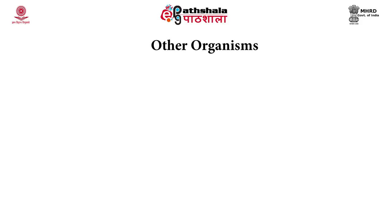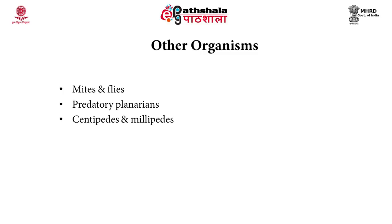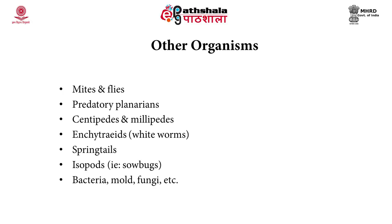When we do vermicomposting, not only earthworms but many other microorganisms are present in the vermicomposting bin. These include mites and flies, predatory planarians, centipedes and millipedes, white worms, springtails, isopods, bacteria, mold and fungi. We can say that the vermicomposting bin is like a circus in which the earthworm is the ringmaster, and the habitable conditions for the earthworm are produced by the other microorganism flora and fauna present in the bin.